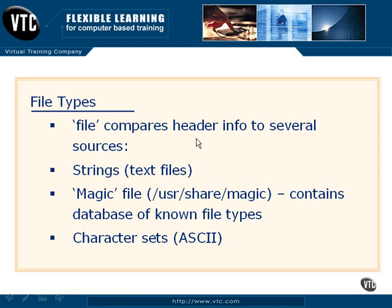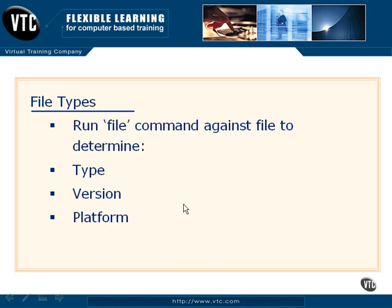We've listed a couple of things here, such as strings, which are basically text values inside of text files. We've also mentioned character sets, such as ASCII. There's actually a built-in command in the operating system that allows us to view file types if we don't know what they are. This is kind of a kickback from not having file extensions — we might not be able to look at a file and tell what it is, but we can use the file command to determine additional information based on that file's header.